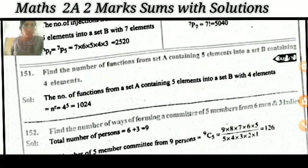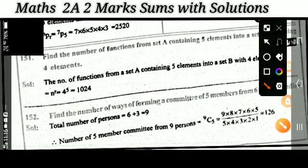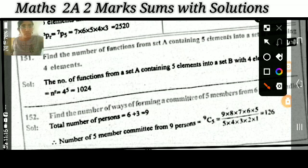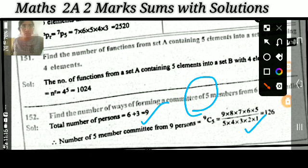Find the number of ways of forming a committee of five members from six men and three ladies. The total number of persons is nine and we have to select five members, which can be done in 9C5 ways.